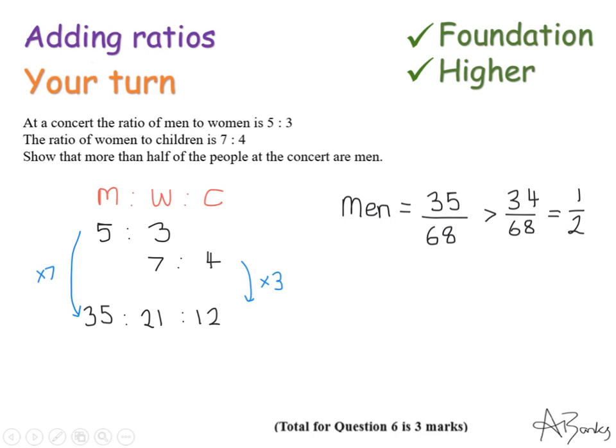Okay, so here's the solution to this question. So I laid it out just like I did before. Men to women is 5 to 3 and women to children is 7 to 4. So this time it's the women here in the middle that have been used in both of my ratios. So I need a number that is a common multiple of both 3 and 7. So I chose 21.